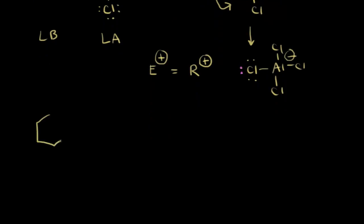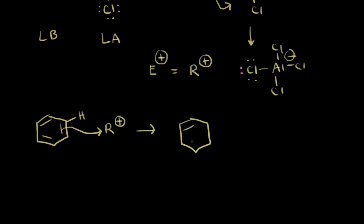Now that we've generated our carbocation electrophile, our benzene ring is going to react with it. The pi electrons in our benzene ring function as a nucleophile and attack the electrophile, since negative charges are attracted to positive charges. Drawing the result of nucleophilic attack: we have our hydrogen still bonded, and we add the alkyl R group to the top carbon, which means the bottom carbon loses a bond and gets the plus 1 formal charge — a carbocation.